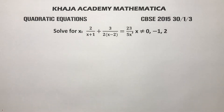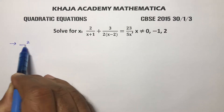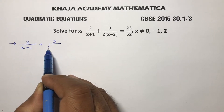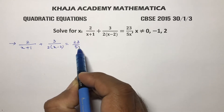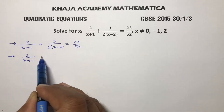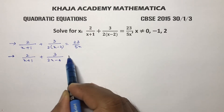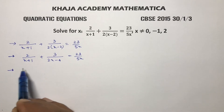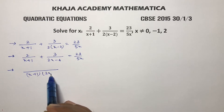Solve for x: 2/(x+1) + 3/(2x-4) = 23/(5x). So here, 2/(x+1) + 3/(2x-4) equals 23/(5x). If I take LCM, the LCM is (x+1)(2x-4).